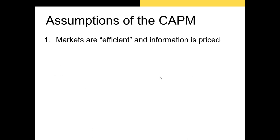The CAPM makes a number of assumptions — this is not a complete list but you should know these at the very least. First, the CAPM assumes that markets are efficient and information is priced. This means investors respond to new information by immediately factoring it into the share price. Bad news indicating cash flows will decline should be reflected immediately by a decrease in the share price.